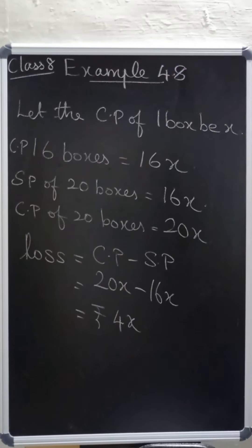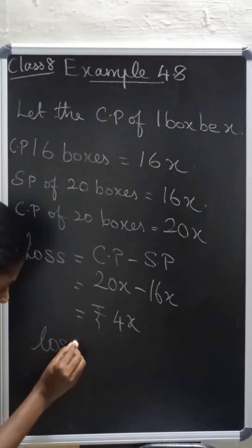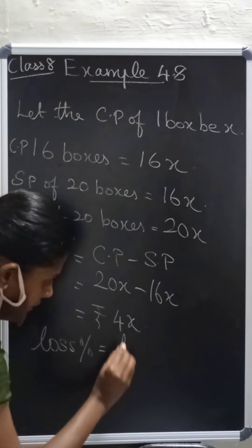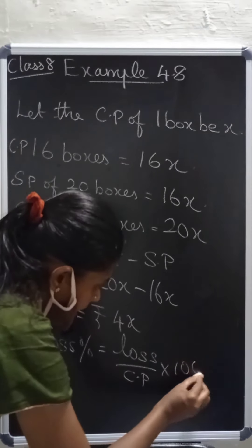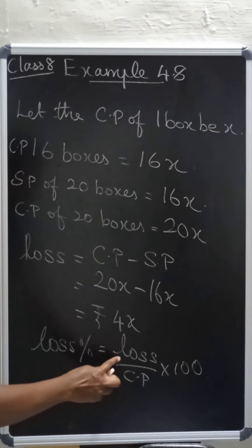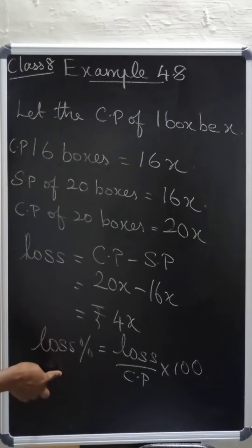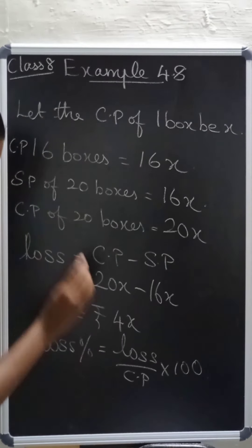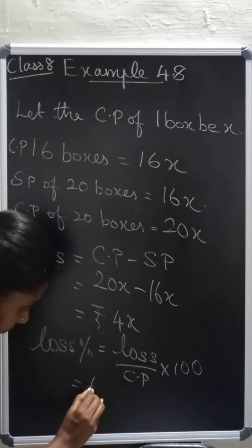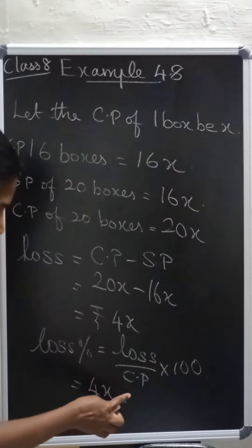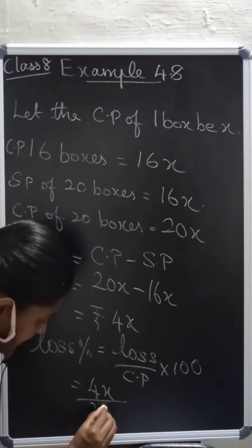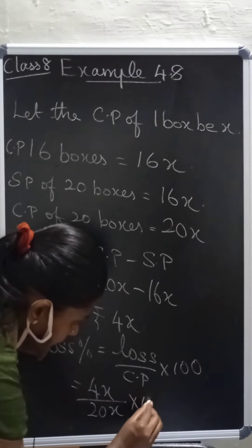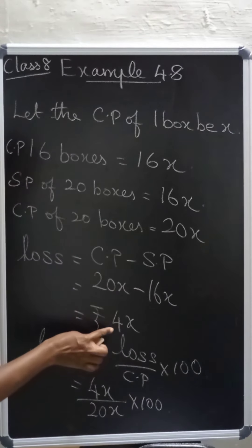Now let's calculate the loss percentage. The formula is: Loss percentage equals Loss divided by CP, multiplied by 100. So loss percentage equals 4x divided by 20x, multiplied by 100, which gives us 20%. Therefore, the loss percentage is 20%.